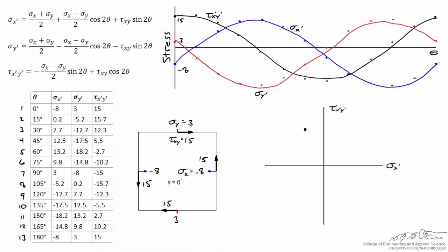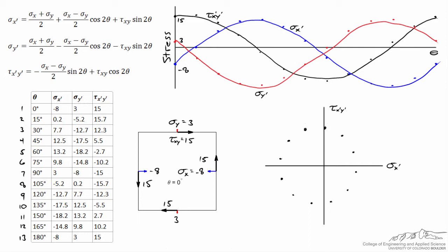Here's our first point, plotted at coordinates of negative 8 and 15. Here's our second point at 0.2 and 15.7, and here I've graphed all 13 points. You'll only see 12 points because points 1 and 13 give the same value. When I graph these we are left with something that looks like a circle — in fact, if I graph the equations themselves we would end up with a circle, and this circle is known as Mohr's circle.